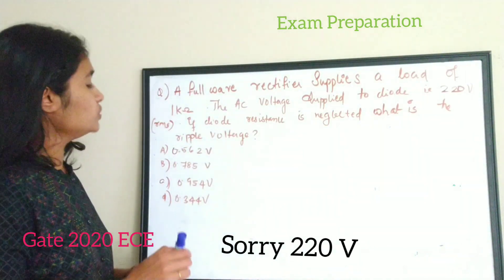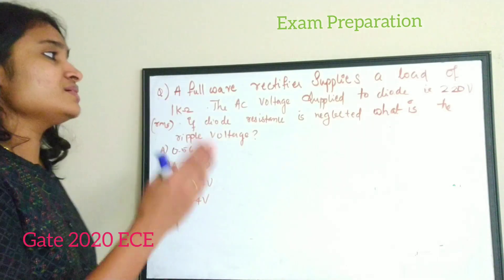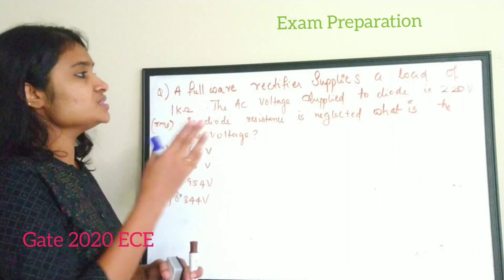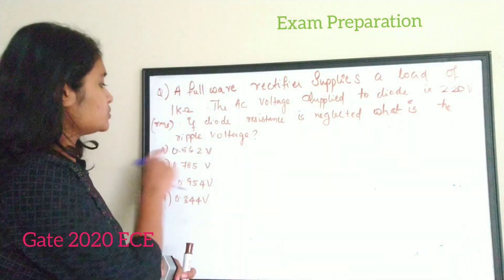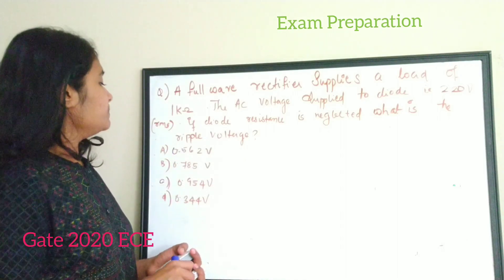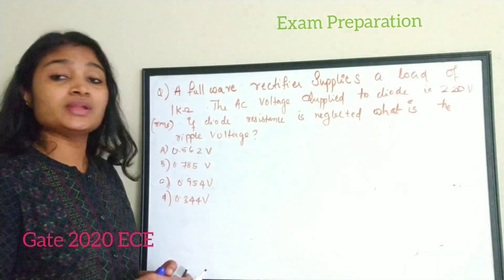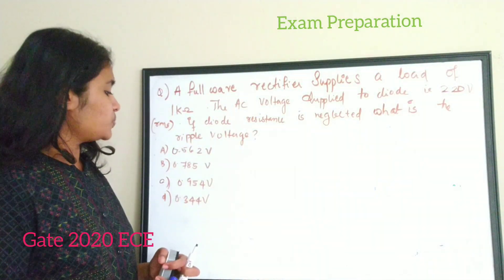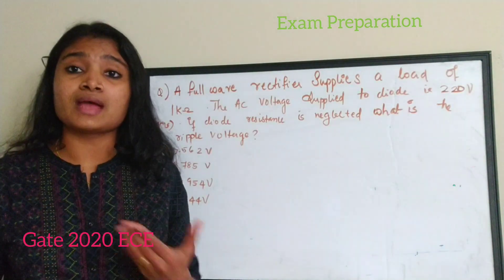If diode resistance is neglected, what is the ripple voltage? The options given are: option A — 0.562 volt, option B — 0.785 volt, option C — 0.954 volt, or option D — 0.344 volt. Before answering this question you should have an idea about ripple.